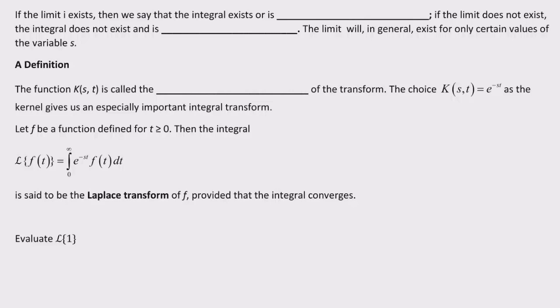If the limit exists, then we say the integral exists or is convergent. If the limit does not exist, the integral does not exist and is divergent. The limit will, in general, exist only for certain values of the variable s.